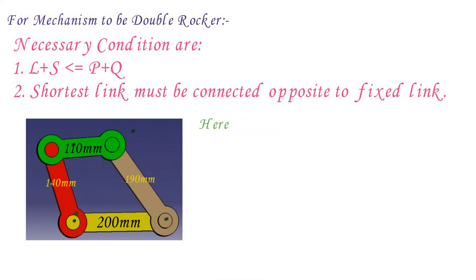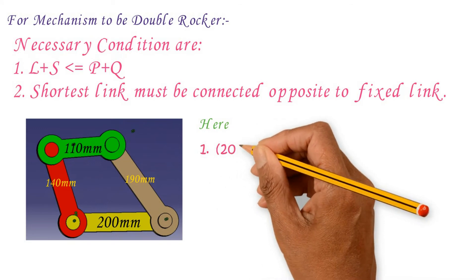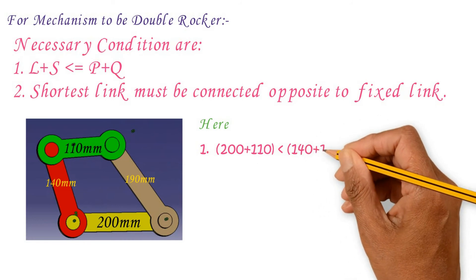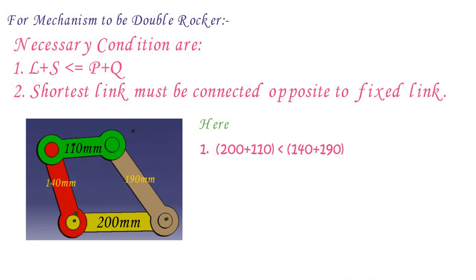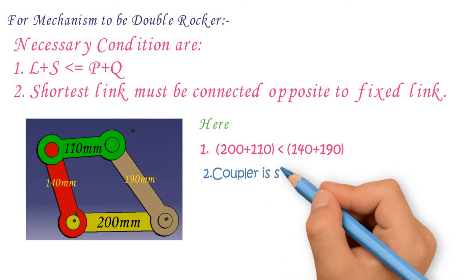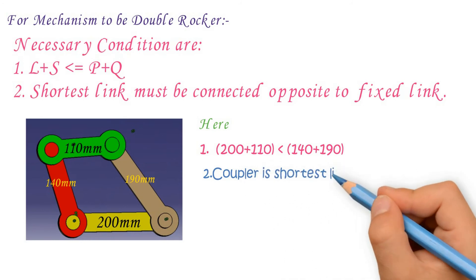Here we have fixed link length is 140mm. 200mm plus 110mm is 140mm plus 190mm. And here coupler is shortest link connected opposite to fixed link. Both conditions are satisfied.